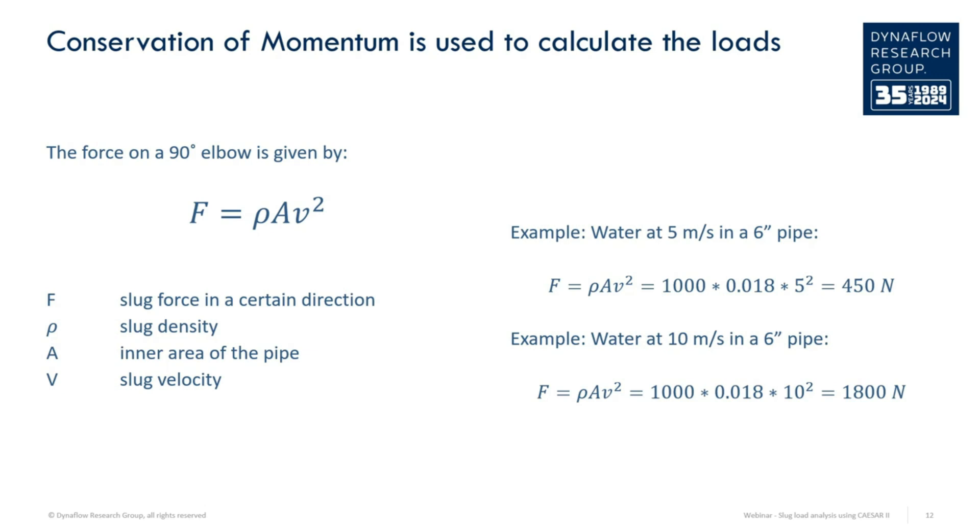Pipes are often designed such that liquid travels at around 3 meters per second. The slugs, however, travel with the gas, which usually has a much higher velocity.